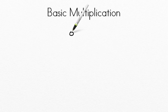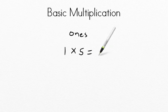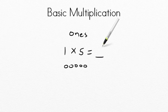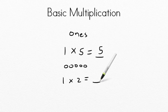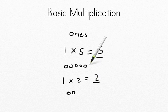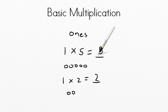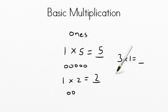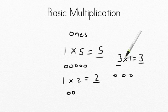Another neat thing is multiplying by ones. One times five — we have one group of five: one, two, three, four, five. The product is going to be five. If I did one times two, that's one grouping of two, and the answer is two. Whenever multiplying by ones, the answer is always going to be the number that you multiplied with one. One times five is five. One times two equals two. If I did three times one, I'd have one group of one, two groups of one, three groups of one — and the answer is three. The product is always the number that is multiplied by one.